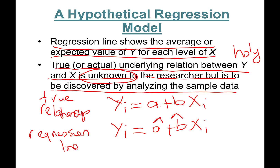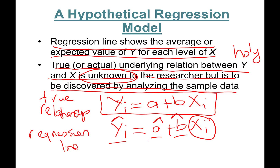Because the true relationship is unknown, Ŷ_i will also have a hat — that's the estimated Y, or estimated sales. â and b̂ are also estimated. Regression analysis helps us estimate these variables. Then we plug in these estimated parameter coefficient estimates and plug in any value of X_i to get the estimated value.